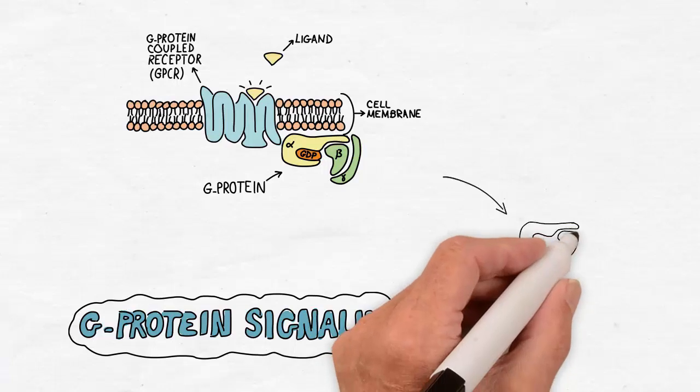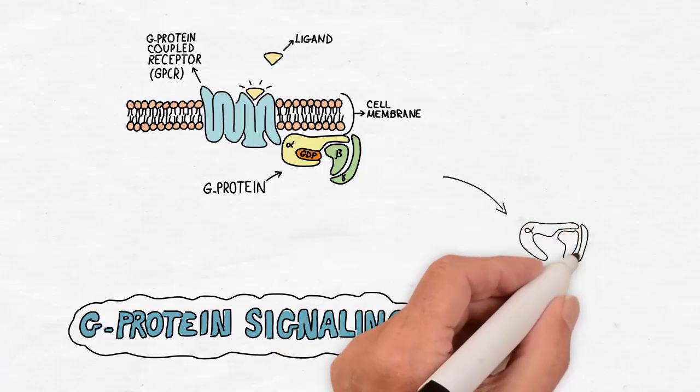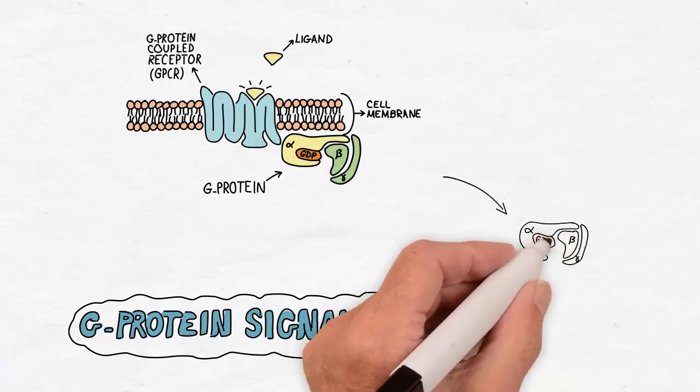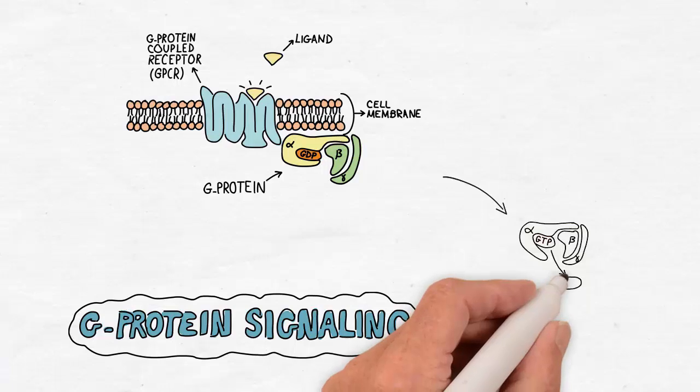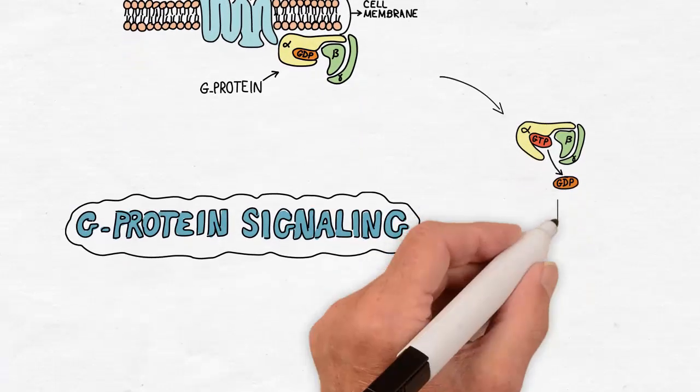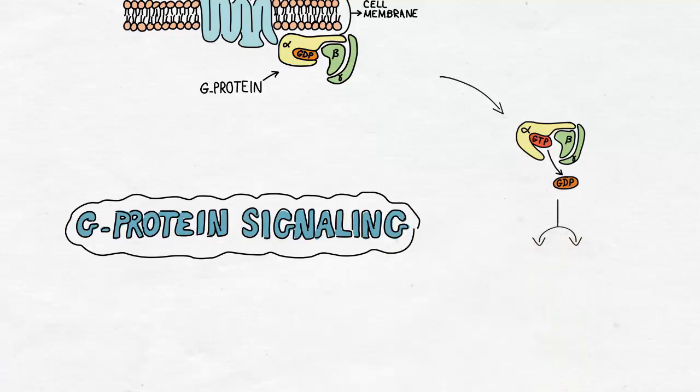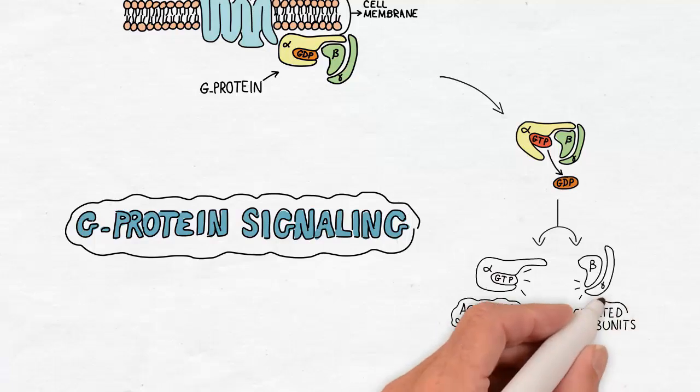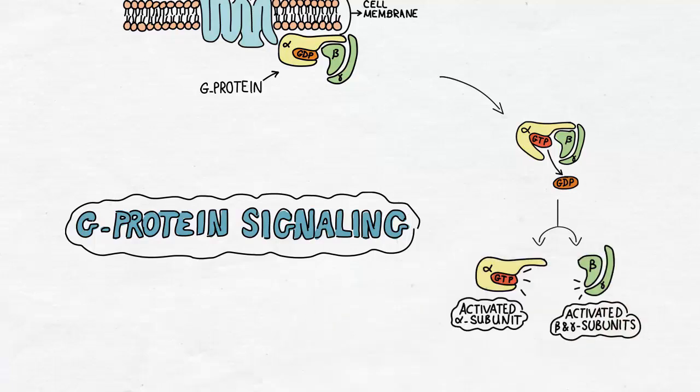In response to the receptor binding to the G-protein, the alpha subunit undergoes another conformational change leading to the release of guanosine diphosphate molecule and binding of a guanosine triphosphate molecule instead. The G-protein is now active and the alpha subunit dissociates from the beta and gamma subunits resulting in an activated alpha subunit and an activated beta and gamma heterodimer.